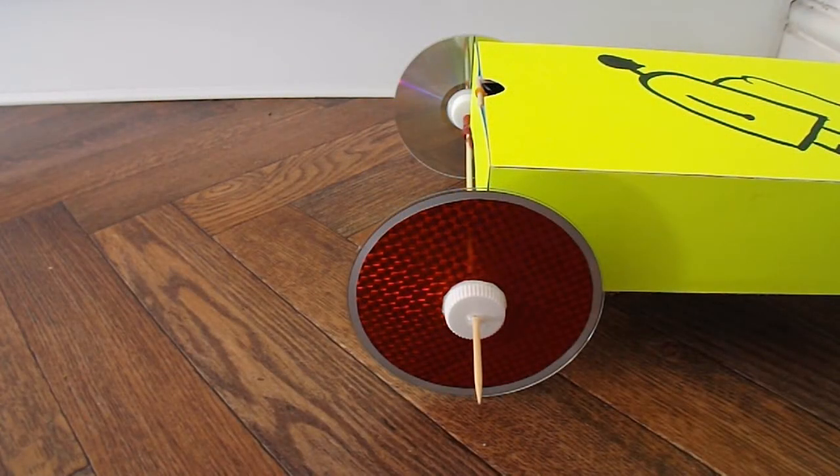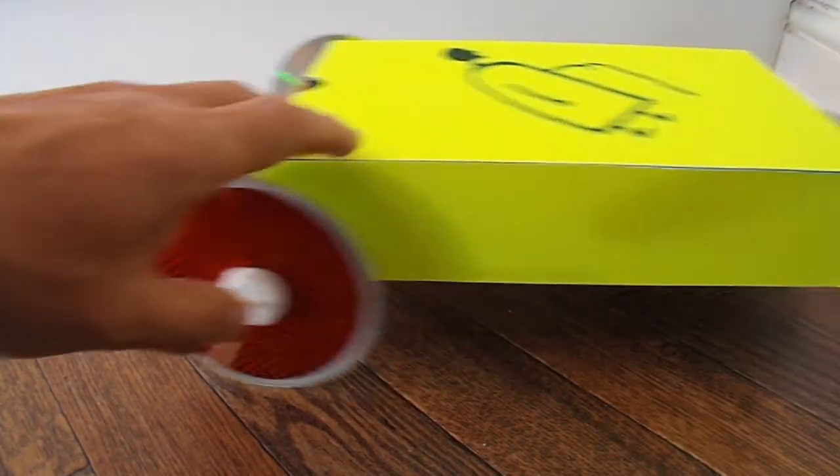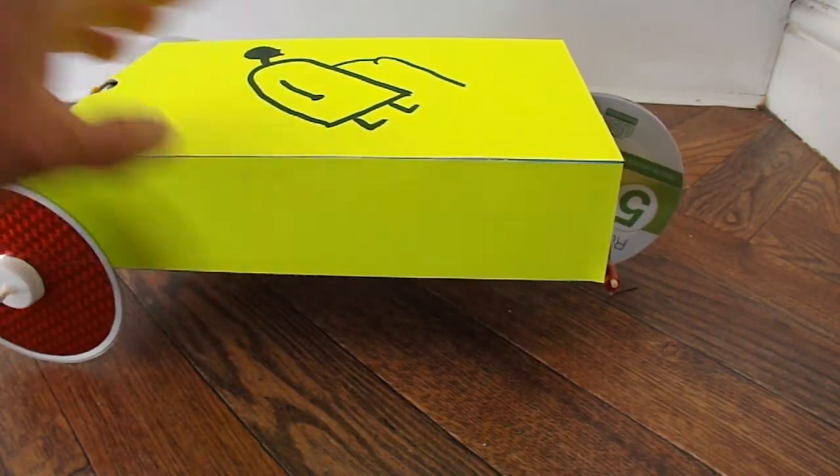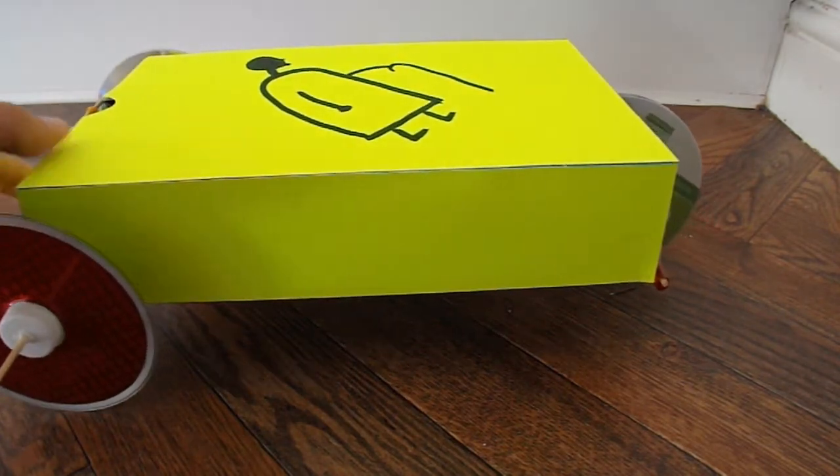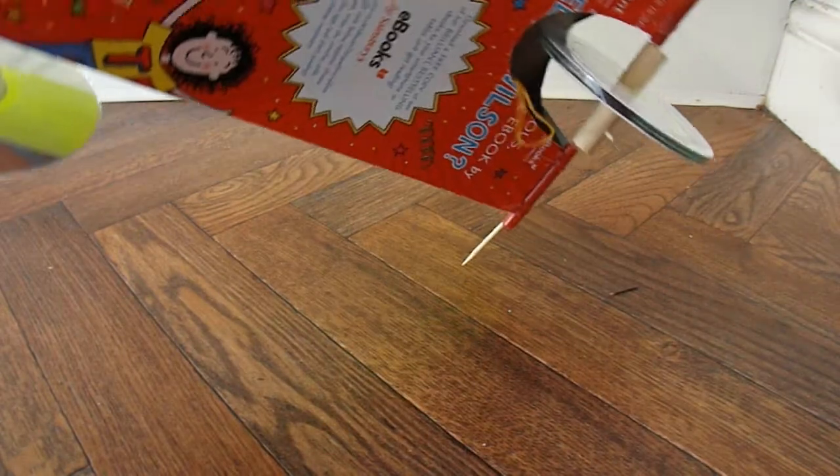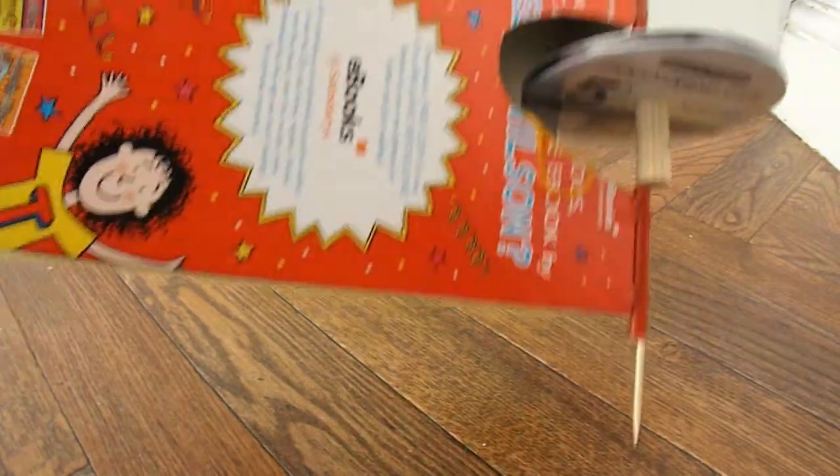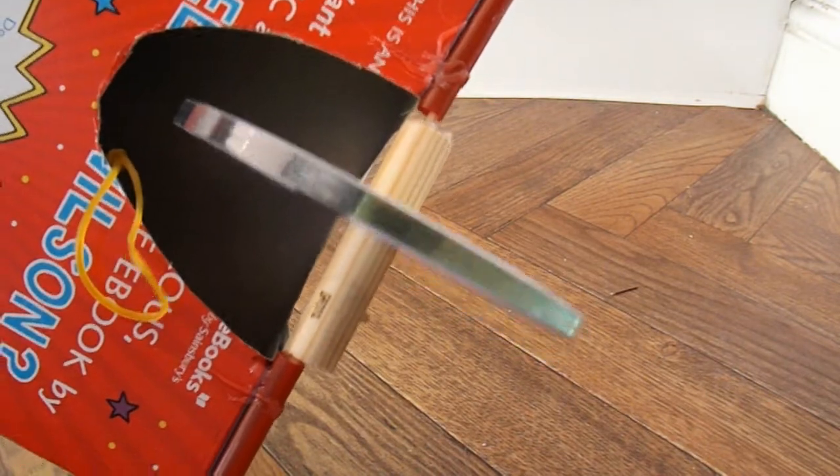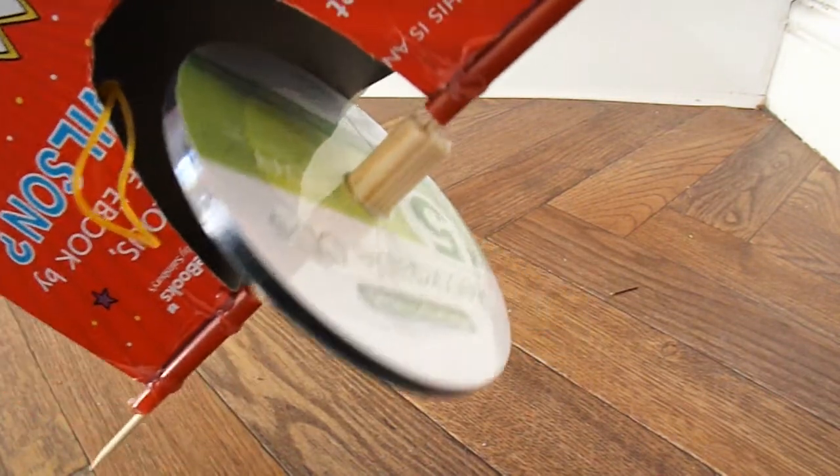Summary time. What have we got? We've got a cereal box that I've covered in bright cardboard for no other reason than to make it look pretty. You can see it's still the cereal box underneath. We've got a single wheel at the back. It's actually a five pack of CDs.